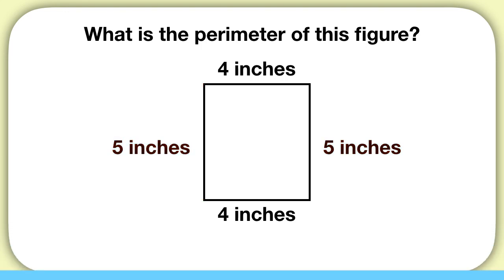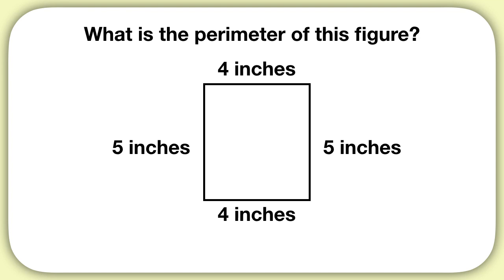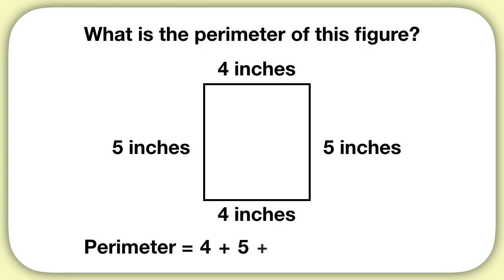Now that we have all the lengths, let's find the perimeter. What will the perimeter of this shape be? Remember, to find perimeter, we can add up the side lengths: 4 inches plus 5 inches plus 4 inches plus 5 inches. When we do this, we get a perimeter of 18 inches.